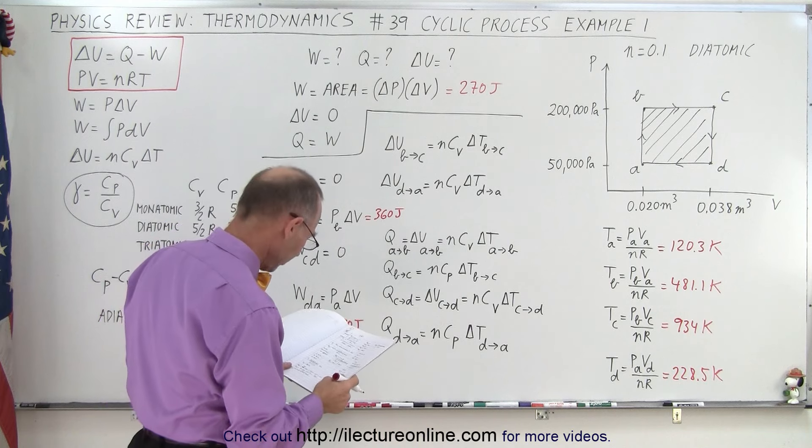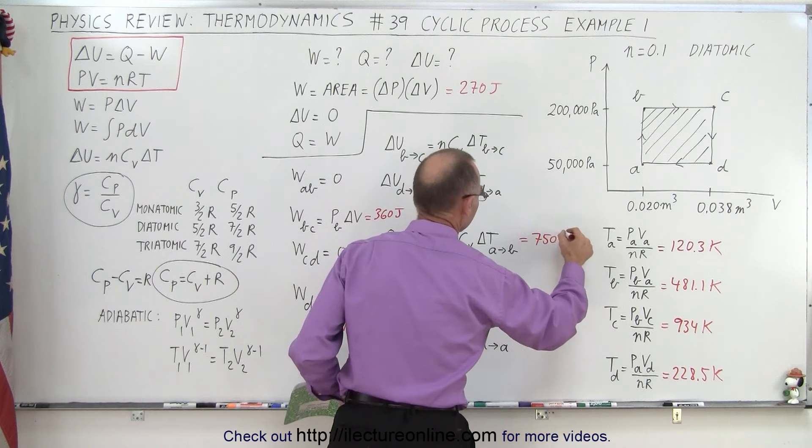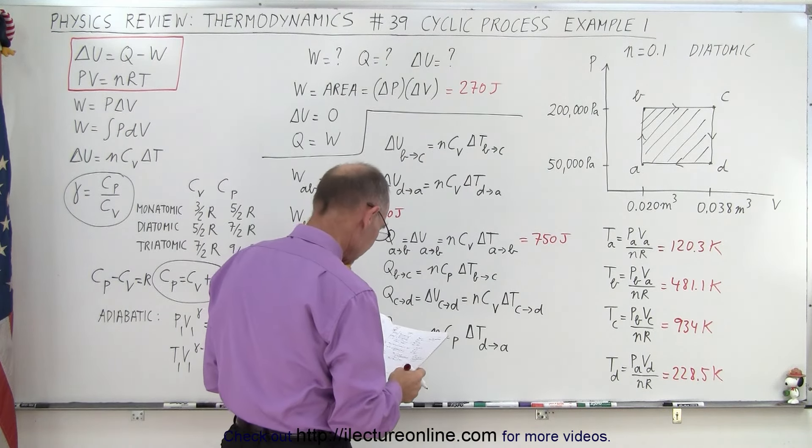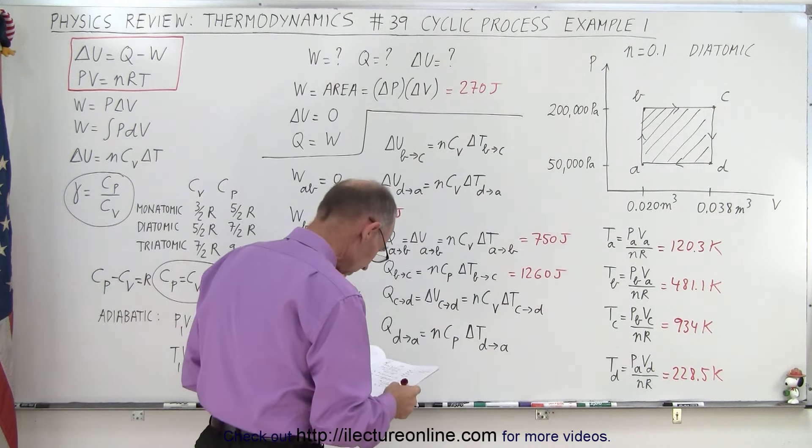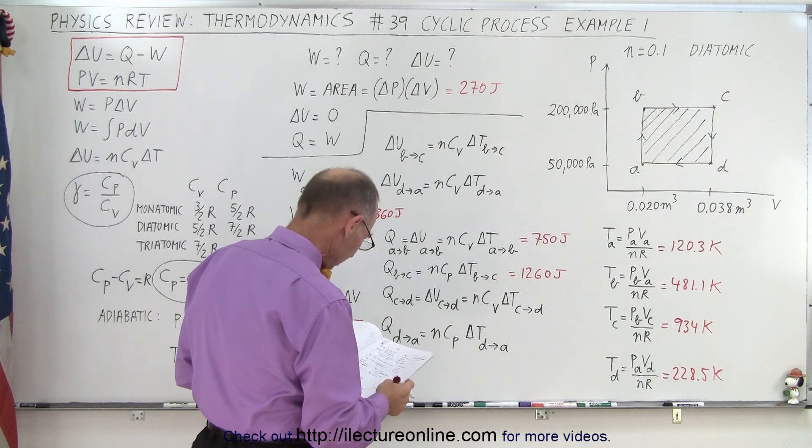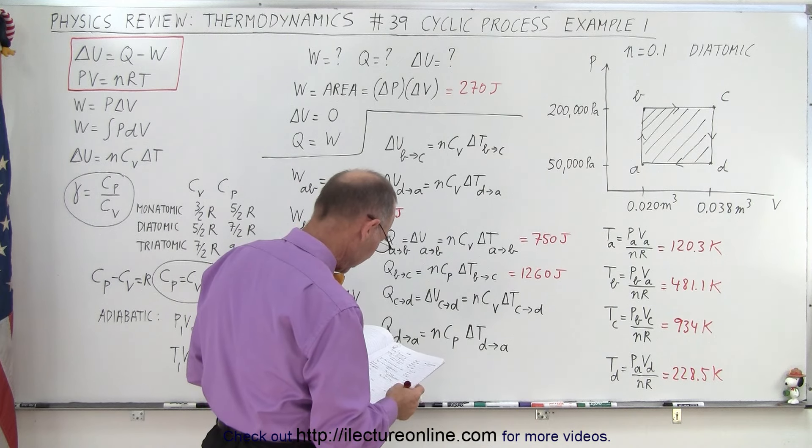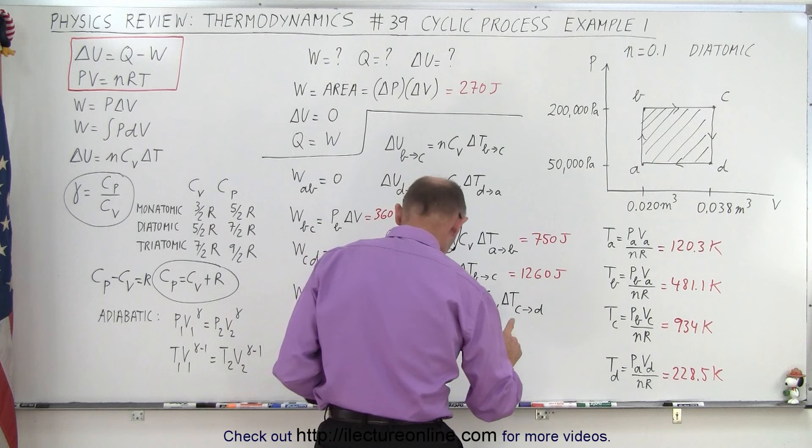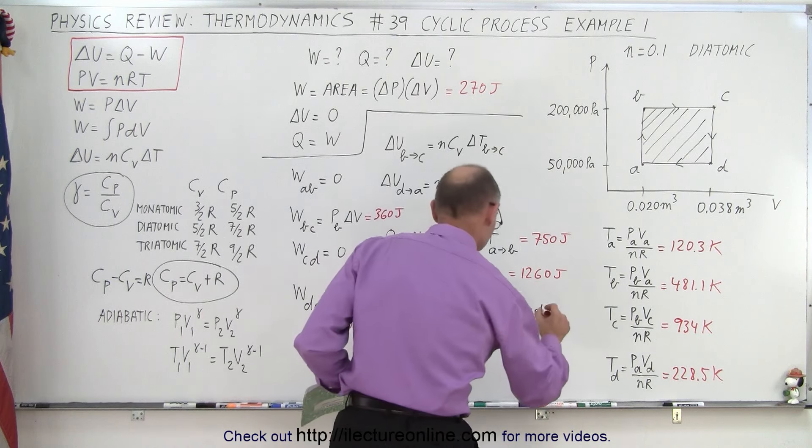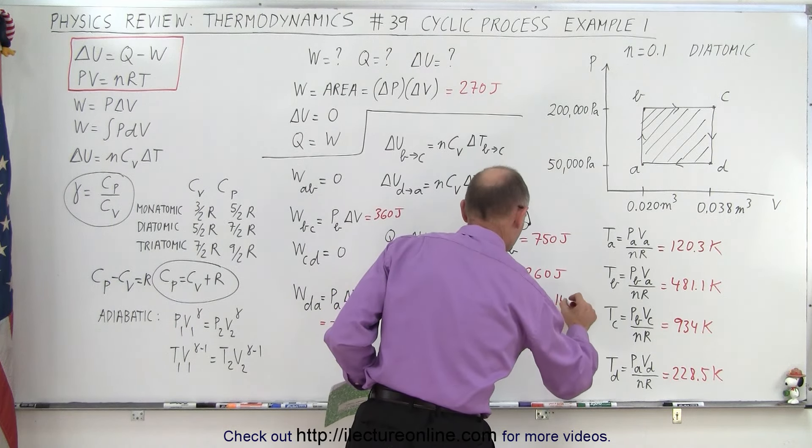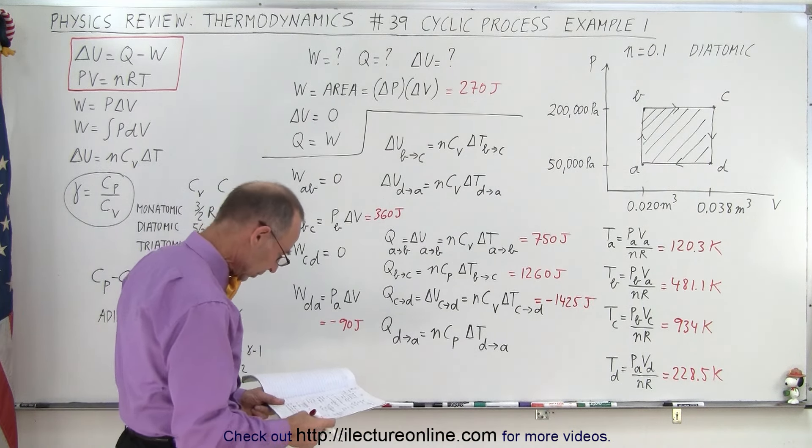Okay, Q from A to B, 750 joules. Q from B to C, 1260 joules. Oh whoa, that's 360, 360 joules. I think I got this wrong. Nope, that's good. Then minus 1425. Like that. And finally, minus 315.